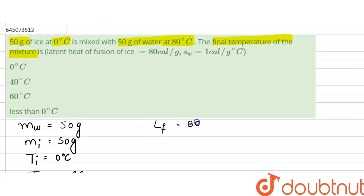Latent heat of fusion is 80 calories per gram, and specific heat of water is 1 calorie per gram degree Celsius.